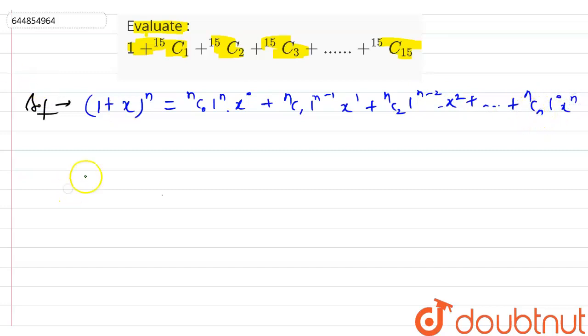Now just put x equals to 1 over here. You will get 2^n equals to nC0 * 1 * 1 plus nC1 * 1 * 1 plus nC2 * 1 * 1 and so on.